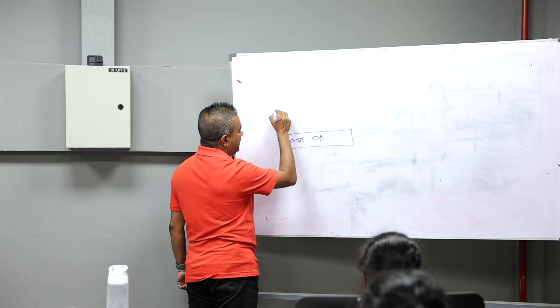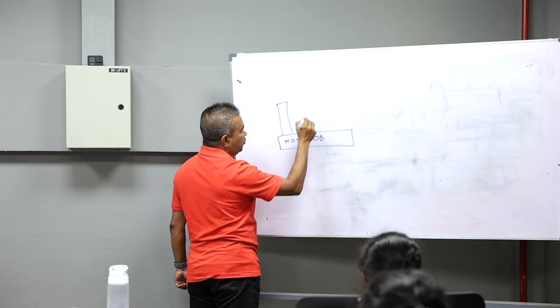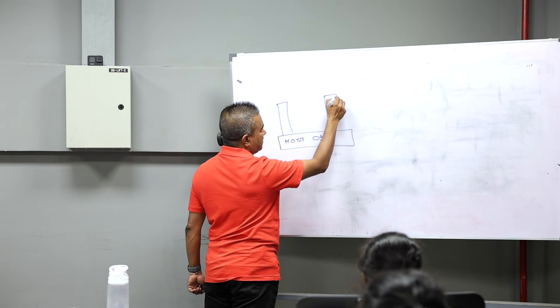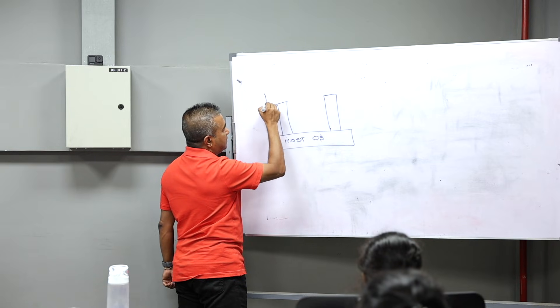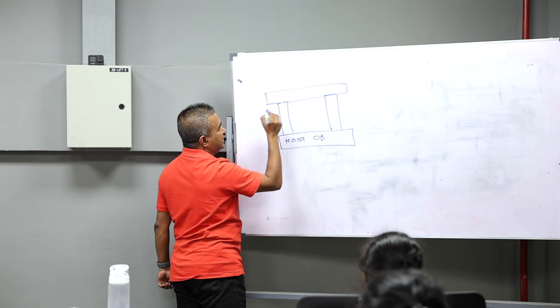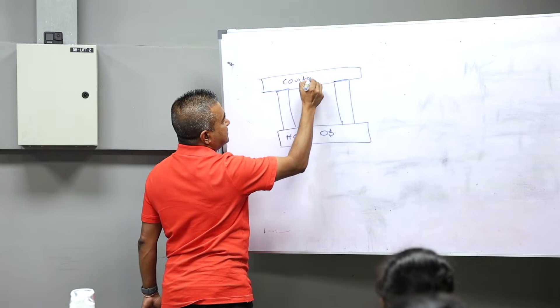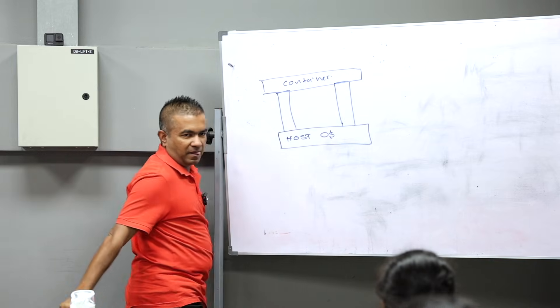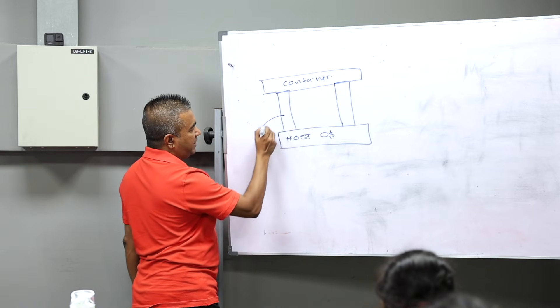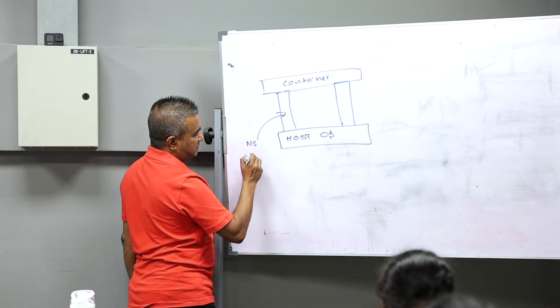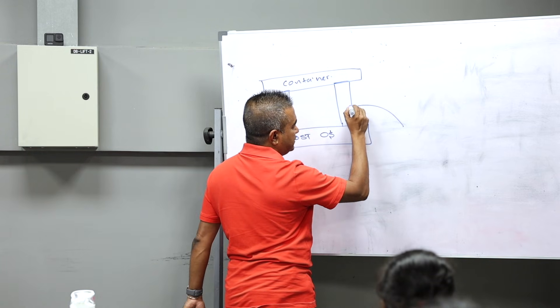There are two pillars that really hold this container concept: one is called namespace, the other one is called cgroup.